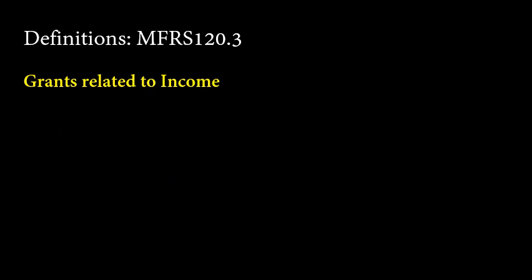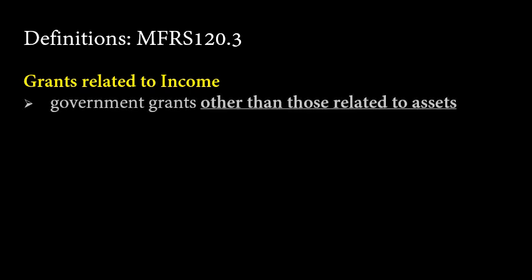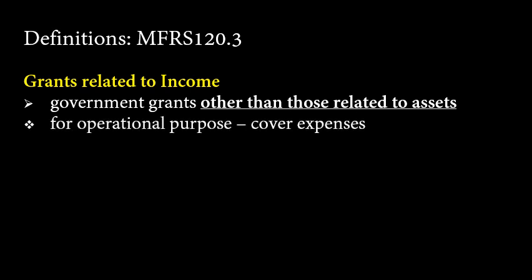The other identified type of government grants is grants related to income. This is the type of grants that is generally other than those related to assets, so everything else other than for acquiring assets will be categorized under this category. Basically, this type of grant is meant for operational activities — that is, to cover certain expenses of the entity.